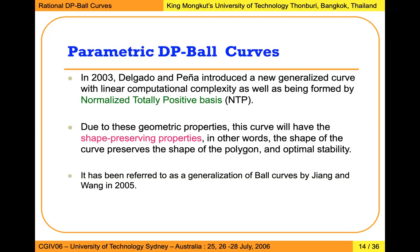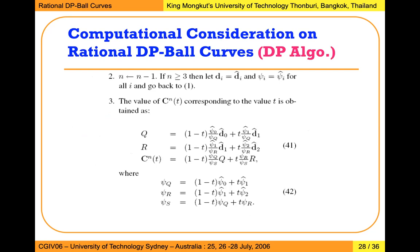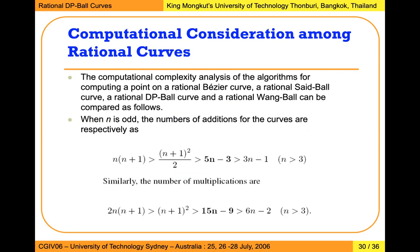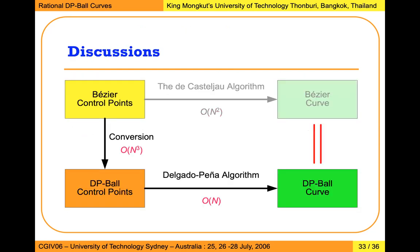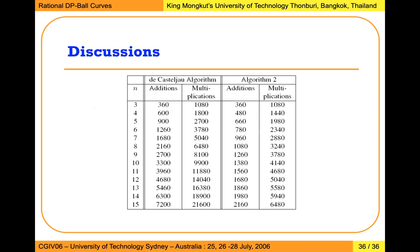You can see this table — this is the castle algorithm to compute for the rational Bezier curve. I want you to find the algorithm in order to find the number of additions and multiplications for Said Ball and Wang Ball curves.